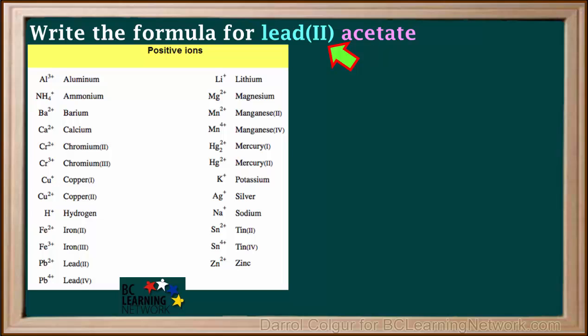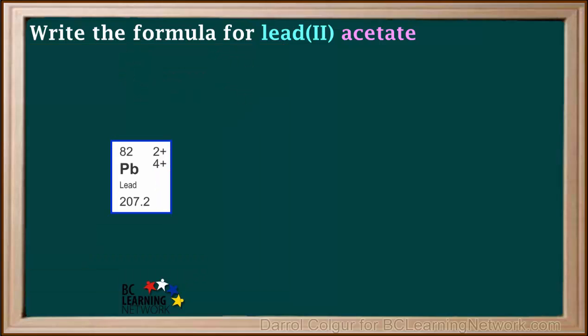On the ion table, we find that lead with the Roman numeral II is Pb with a positive 2 charge. We can also find lead on the periodic table. Lead with Roman numeral II indicates the lead ion in this formula has a positive 2 charge.